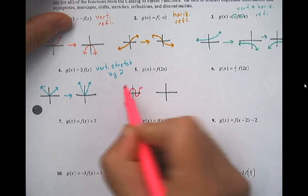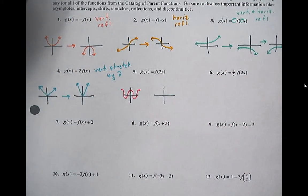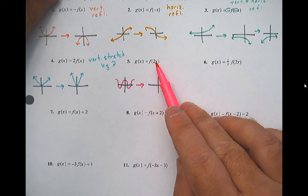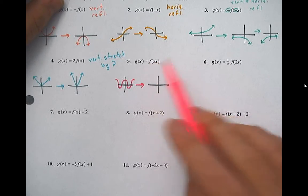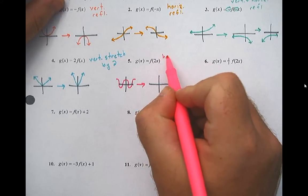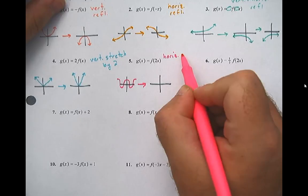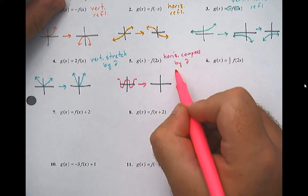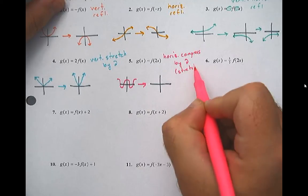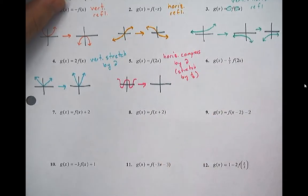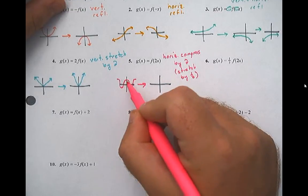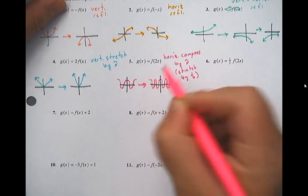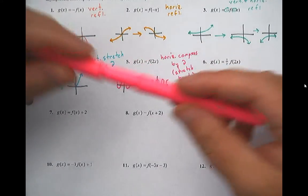Now we're going to apply a transformation — there's a two getting multiplied to the x. So it's not going to affect the y values; it's going to affect the x values. Anything affecting x does the opposite of what you would think. So this is going to be a horizontal compression by two, or a stretch by one half. Instead of getting one period in here, I'm going to be able to get two. So that took the graph and compressed it down so that it happened more often.